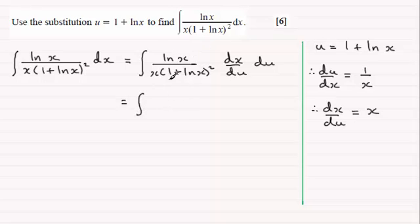We've got the natural log of x, which if I rearrange this equation here is equal to u minus 1. So I could put u minus 1 there.